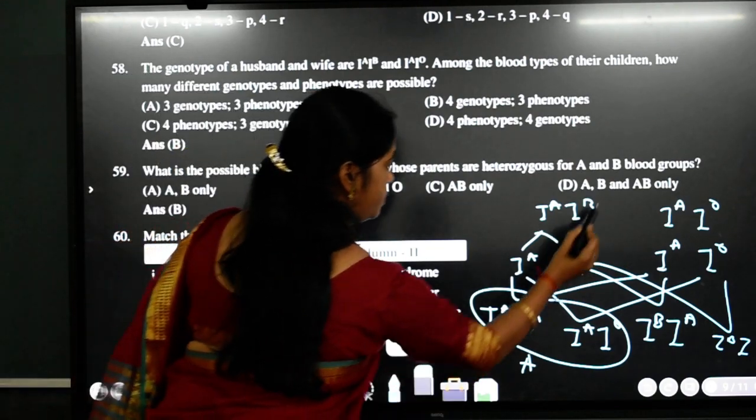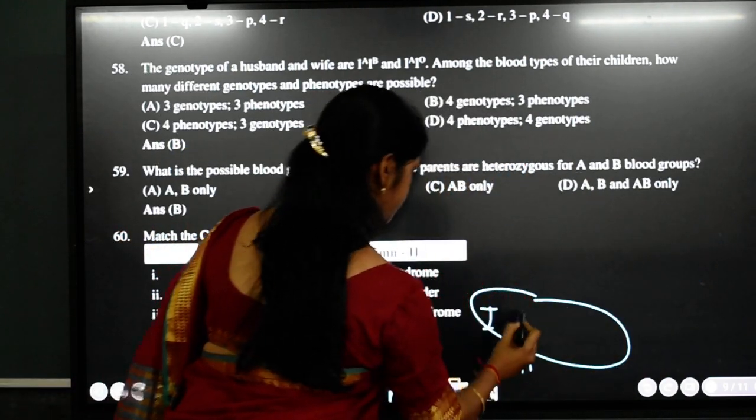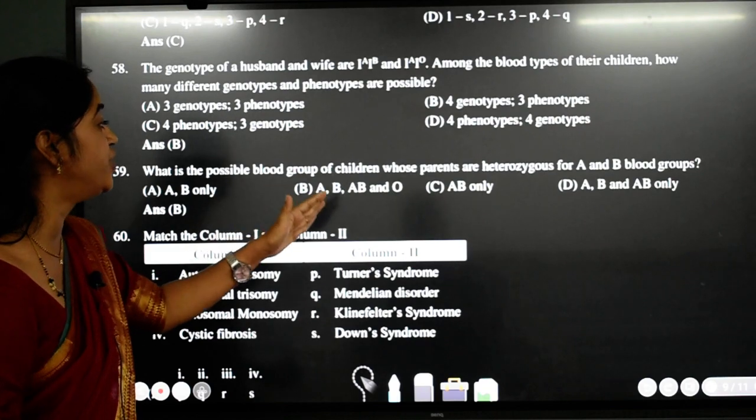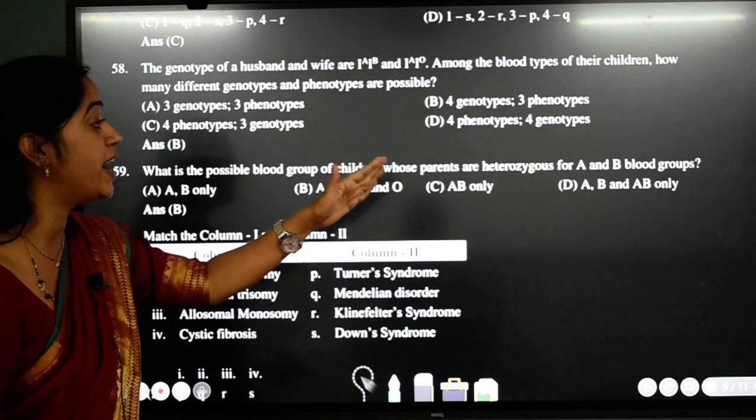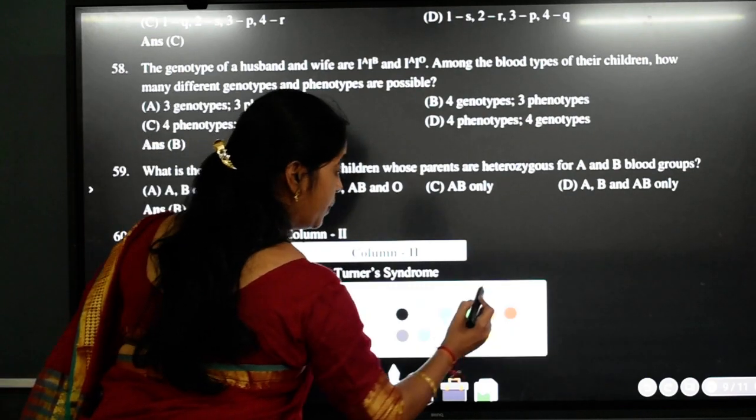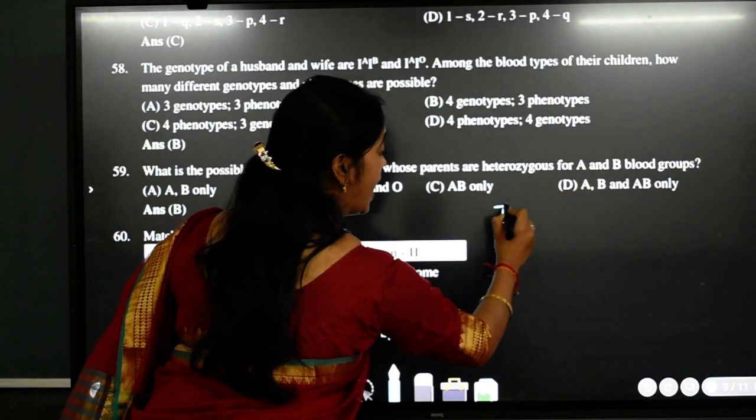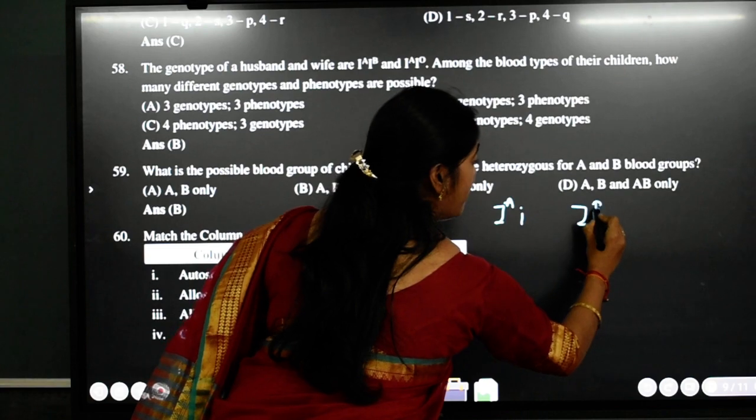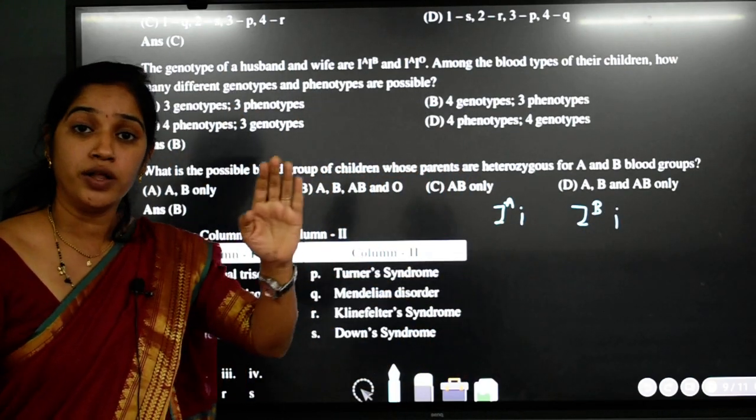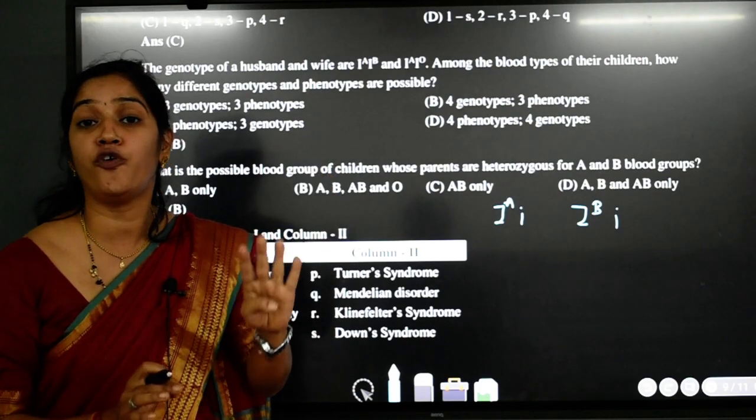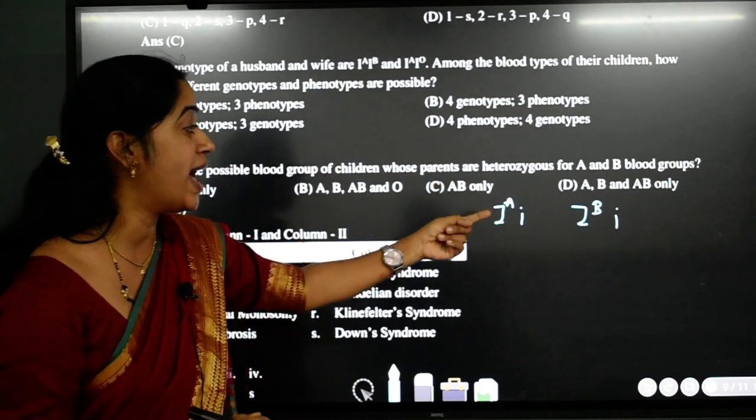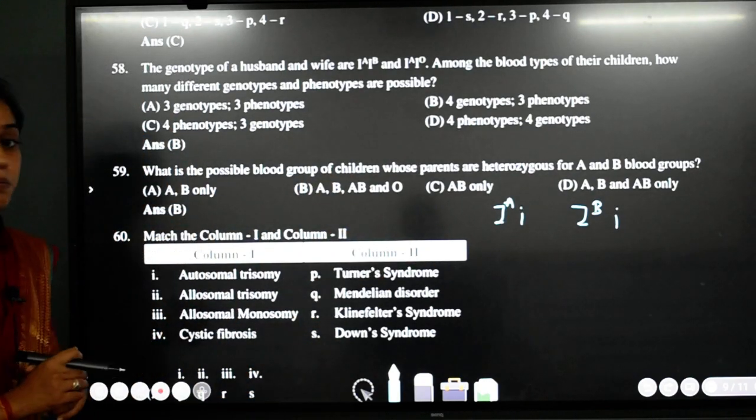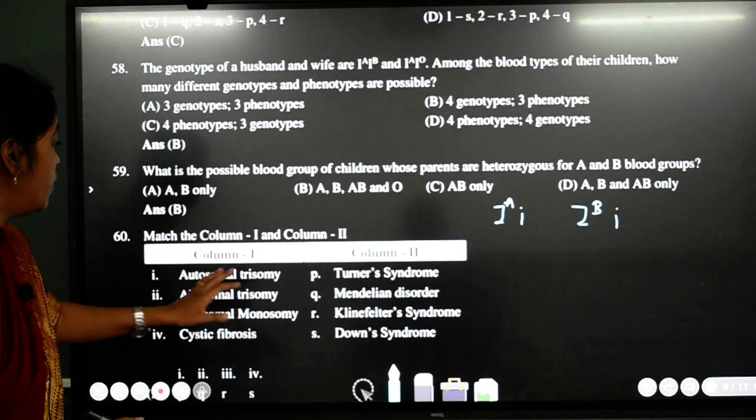Next question. What is possible blood group of children whose parents are heterozygous for A and B blood group? Please remember, when the parent is heterozygous, it will be the parents are A and B. So one of the parent must be having IA small i, one of the parent must be having IB small i. In this case, there are possibility that they have all four blood group children. So you can have child with A blood group, B blood group, AB blood group and O blood group. So the option is B. Last question for today is match the column one with column three.